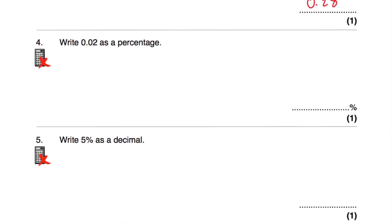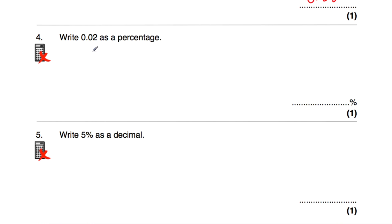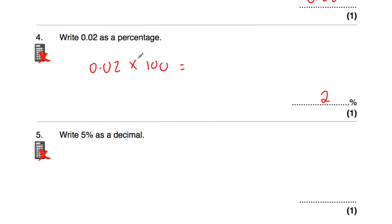Question number four is to write 0.02 as a percentage. You might be able to just look at this and spot it as 2%. Alternatively, you can take 0.02 and times it by 100, so we're moving the digits two columns to the left. The 2 moves into the tenths and then into the ones or units, so that would be 2%.